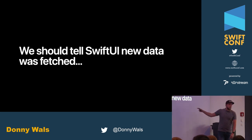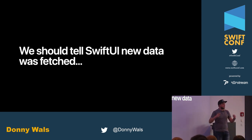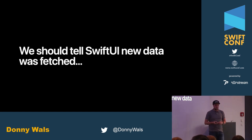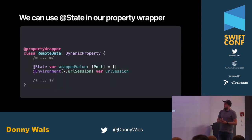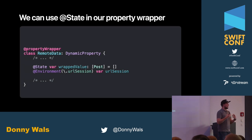We need to use something like the @State property wrapper or @StateObject to trigger that view update. Our dynamic property has access to the environment and can tell the view to update, but it needs one of its observing objects to change. So we could make our wrappedValue a @State var and hope that works — because when the data value changes, SwiftUI will update since it's a state property.